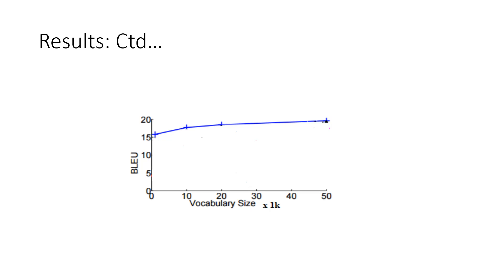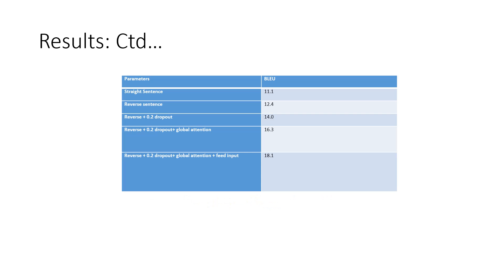If you look at the variation of the BLEU with the vocabulary size, you can see that till 40k words or 40k vocabulary size, it keeps on increasing and it reaches a constant level after some point. If we look at the BLEU scores, we see that we got a maximum score when we used a reverse sentence with probability 0.2 and global attention with feed input.